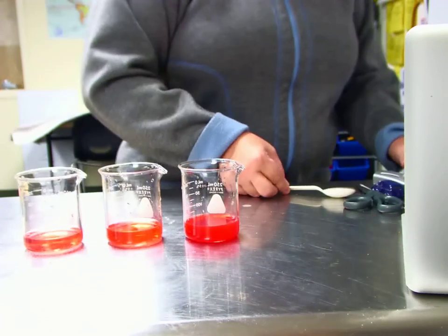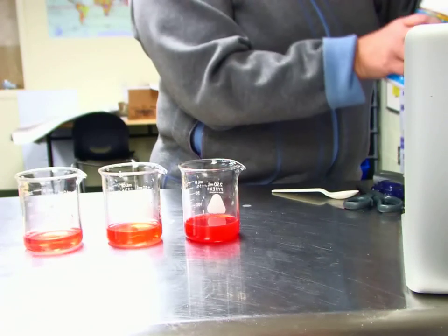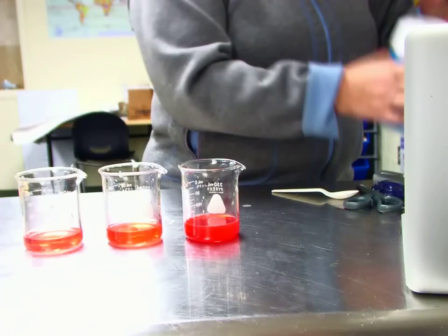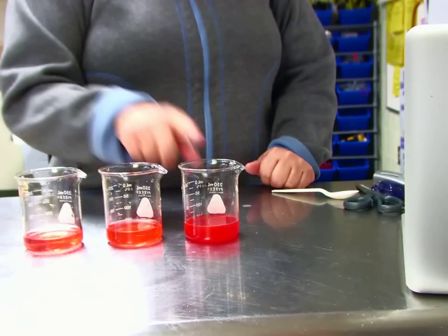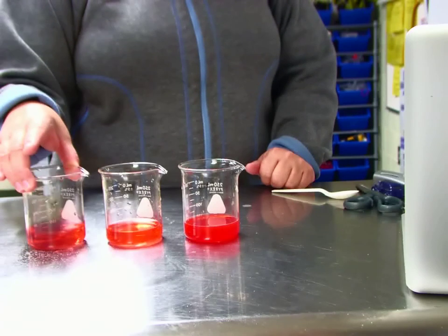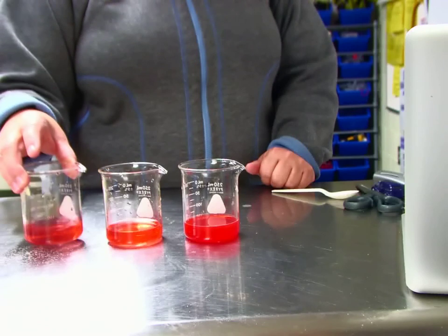Now, the way that scientists classify solutions is based on their concentration. So, if you look at each of these three solutions, this one is not very concentrated. This one is called dilute, because it doesn't have very much solute in it.